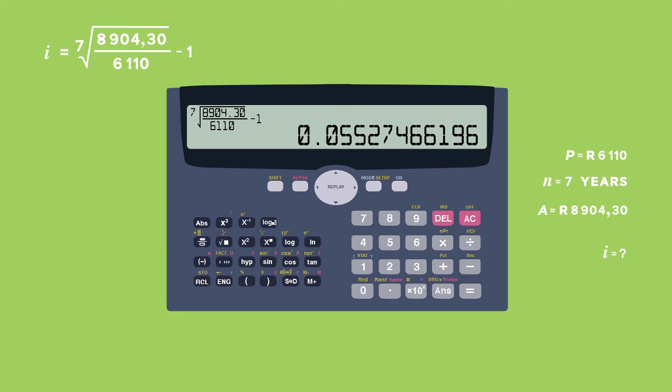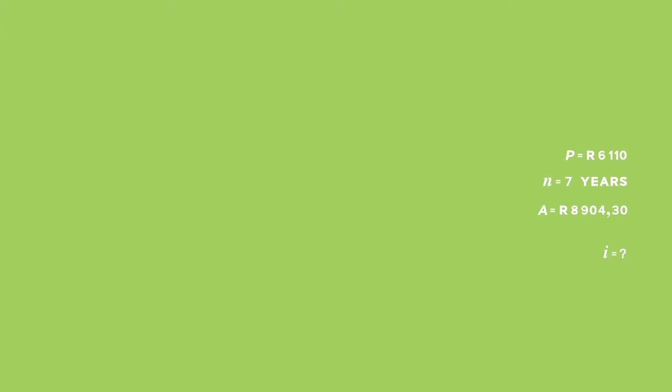Hit the equals, and that will give us a decimal form. Our answer is 0.05527466196, multiplied by 100, which gives us 5.527466196. This is where we're going to be rounding off. Rounding off to one decimal place, I will get my interest rate in percentage form at 5.5%.